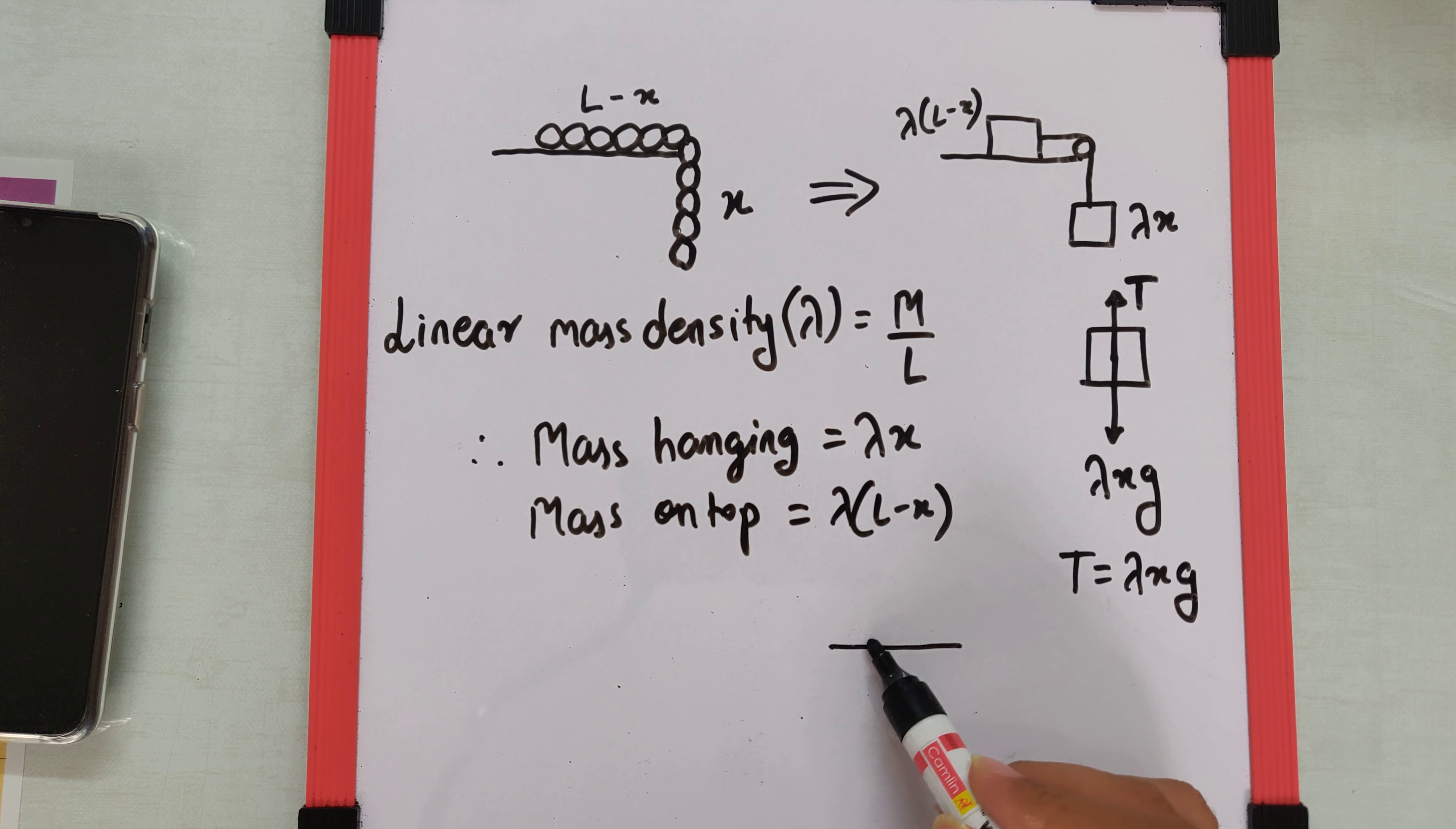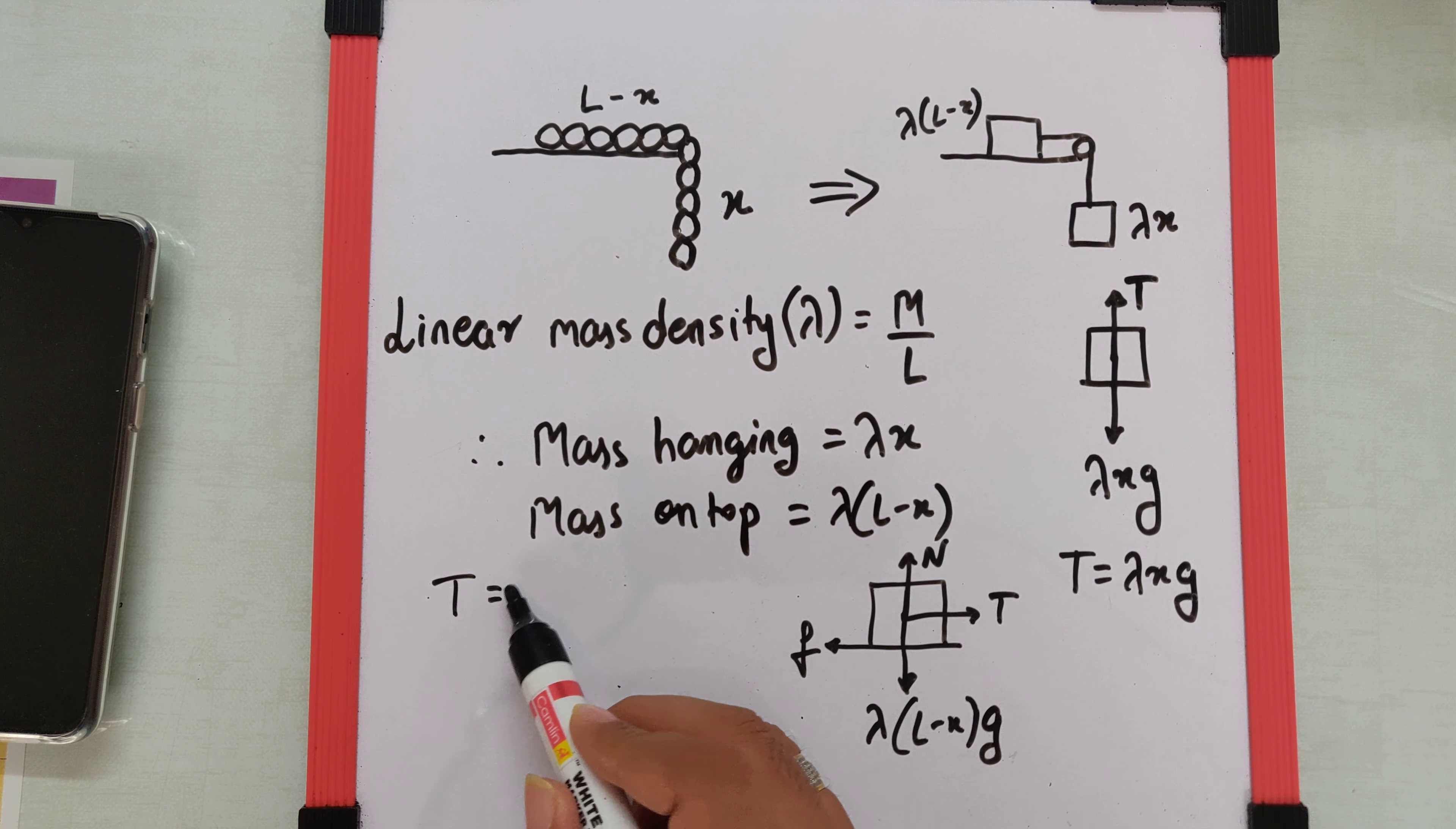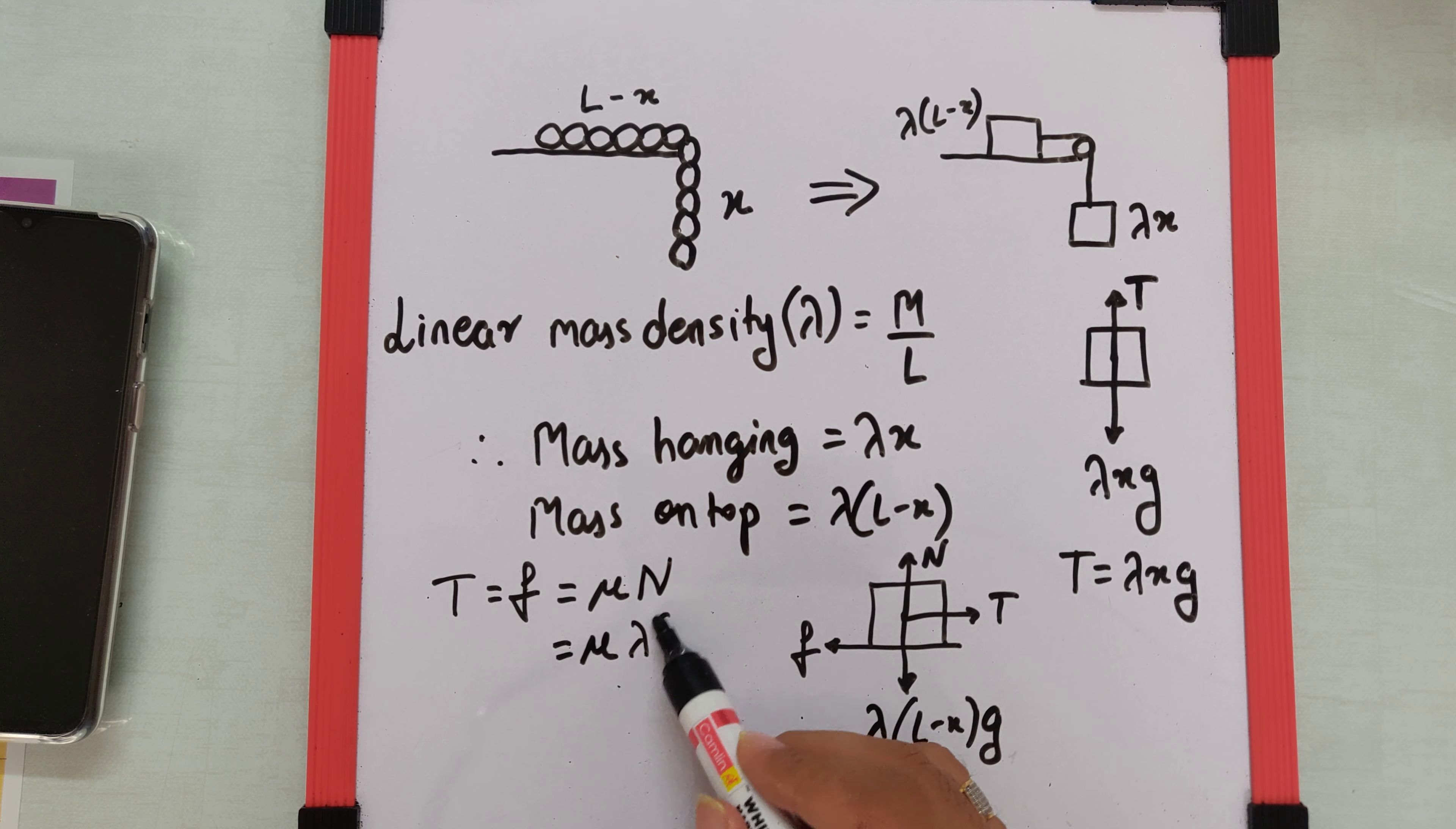Whereas the free body diagram for the block on the table would be: the weight will be λ(L minus x)g, there will be a normal reaction, there will be tension, and the friction force will be the one which is going to balance the tension. So here I can say tension equals friction, and friction we know is μN, and N is λ(L minus x)g.